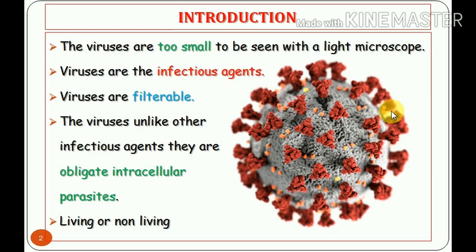Viruses are filterable. If you filter a mixture of virus and bacteria, the viruses will pass through the filter, but bacteria will not. Viruses, unlike other infectious agents, are obligate intracellular parasites — they need to get into a host cell to multiply; otherwise they cannot multiply. Viruses are recognized as both living and non-living, and there is a controversy. Whenever a virus is not within a host cell, it acts like non-living. But once it gets into a host cell, it can multiply and synthesize protein, nucleic acids, etc.